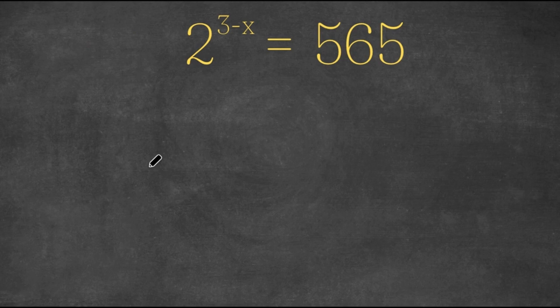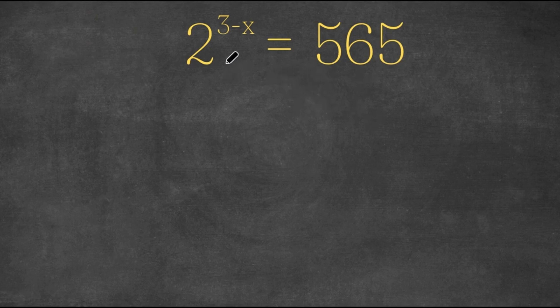Welcome back to Click Academics. In today's video, I'm going to be teaching you guys how to solve this exponential equation. We have 2 to the power of 3 minus x equals 565.